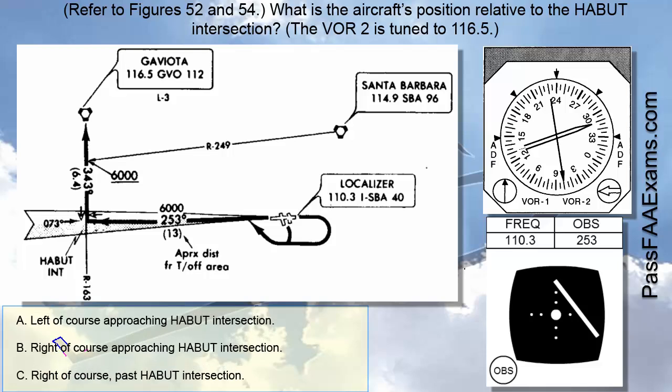Our aircraft is departing using the Santa Barbara localizer backcourse for guidance and the Gaviota VOR for range. The answers place us either left of the localizer and approaching the HABIT intersection, right of the localizer and approaching the HABIT intersection, or right of the localizer and past the HABIT intersection. So, let's first discuss the airplane's position relative to the HABIT intersection.